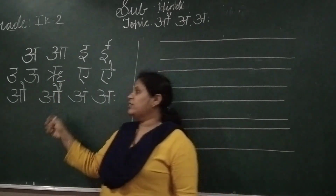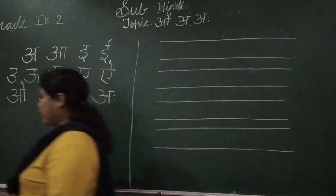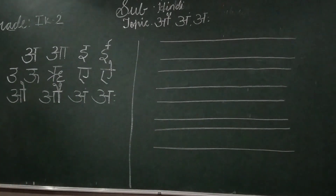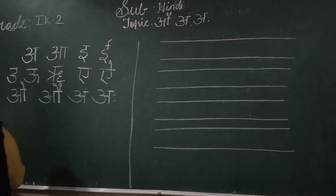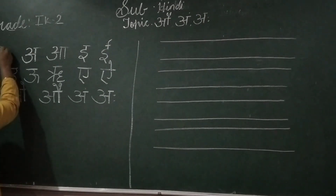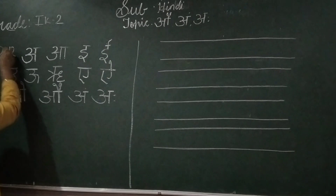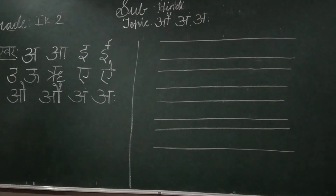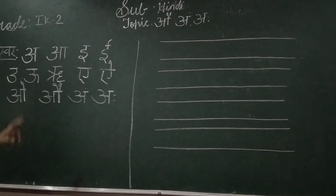This is called Swerve. What do we call this as? Swerve. Swerve means vowels. From R to Aha, it is Swerve. There are thirteen letters, so we will revise once.